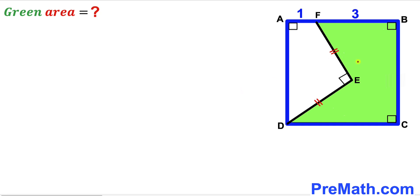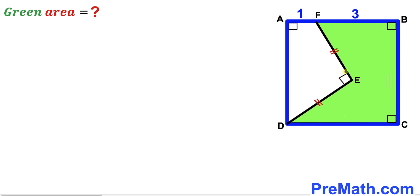Welcome to pre-math. In this video we have a green shaded region along with quadrilateral ADEF fully confined in a blue square ABCD, such that segment EF equals segment DE, angle DEF is 90 degrees, segment AF is 1 unit, and segment BF is 3 units. Our task is to calculate the area of the green shaded region.